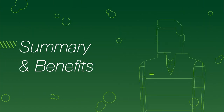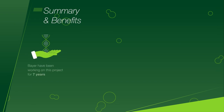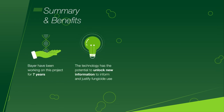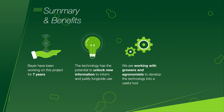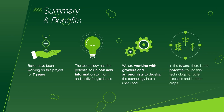Thank you for watching this video explaining Bayer's rapid disease detection technology. In summary, Bayer have been working on this project for seven years. This technology has the potential to unlock new information to inform and justify fungicide use. We are now working with growers and agronomists to develop the technology into a useful tool. Whilst we have been working on this project since 2014, this is only the beginning of our future fungicide decision technology, which we plan to further develop and improve, and ultimately expand into other diseases and crops.